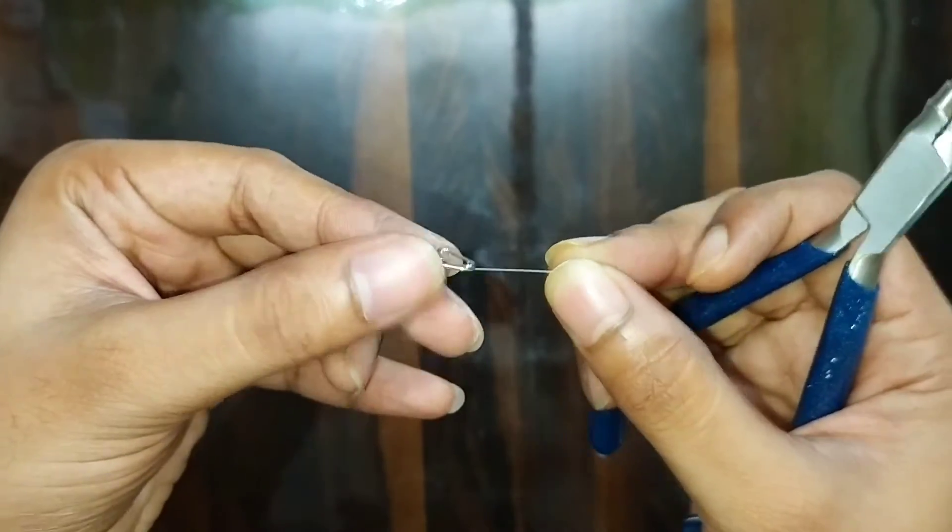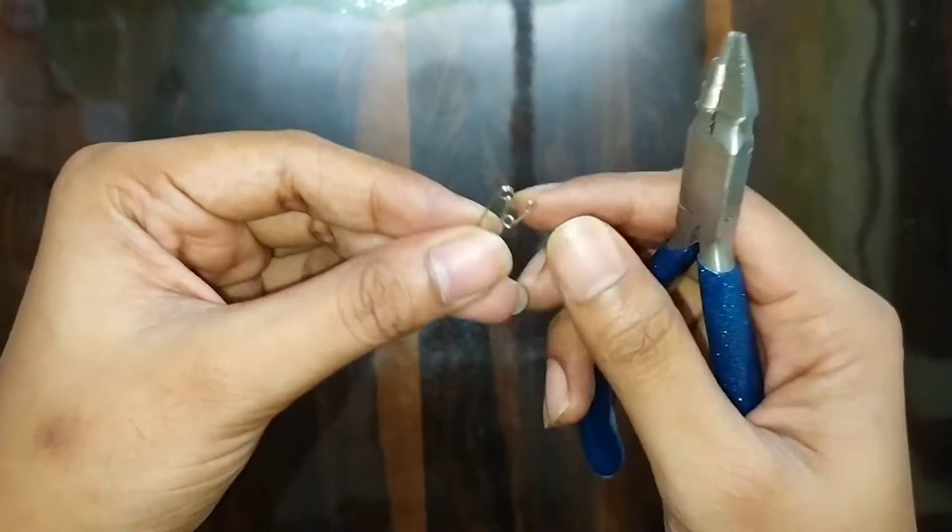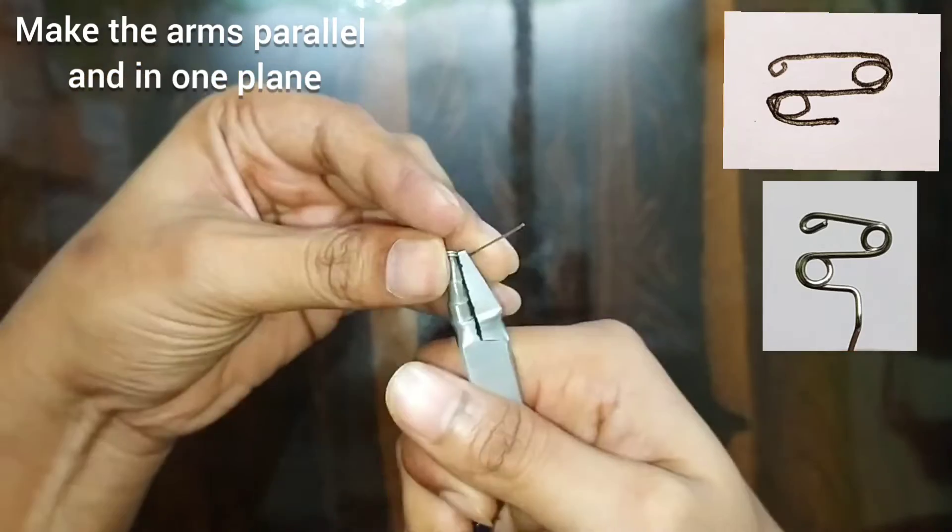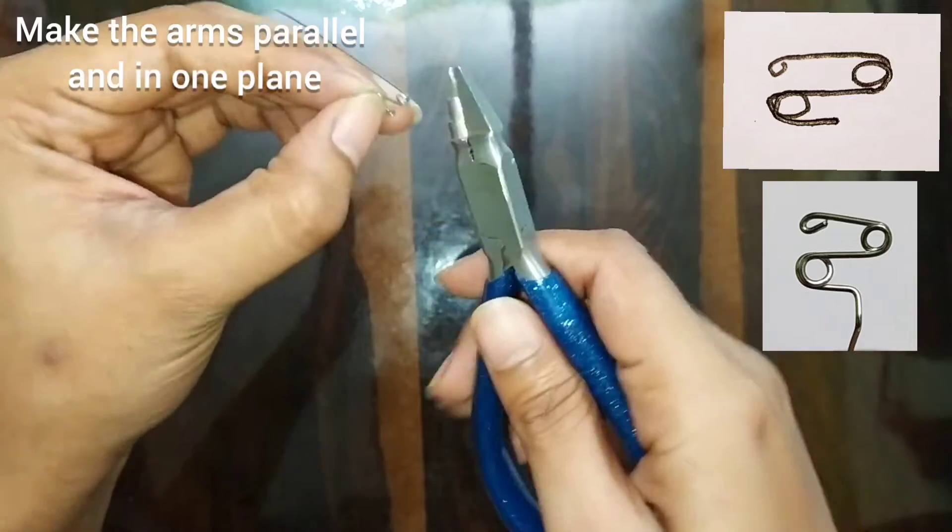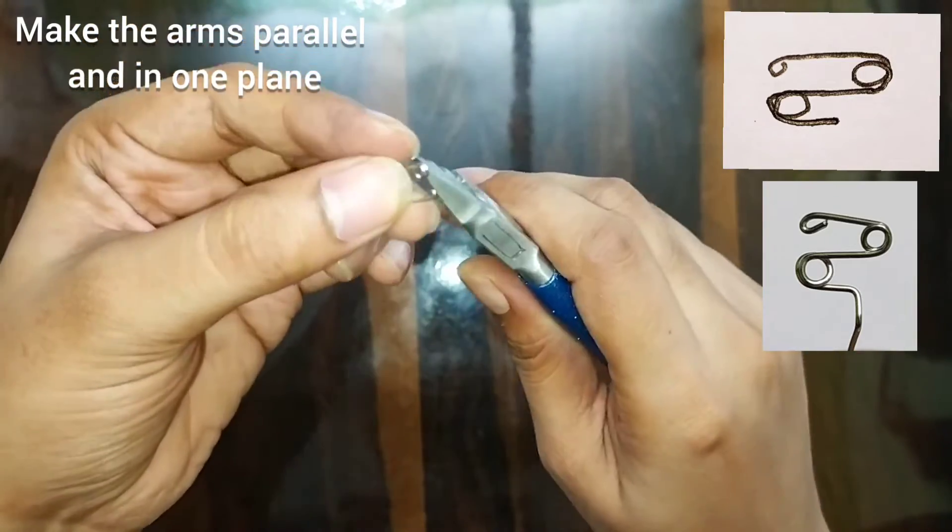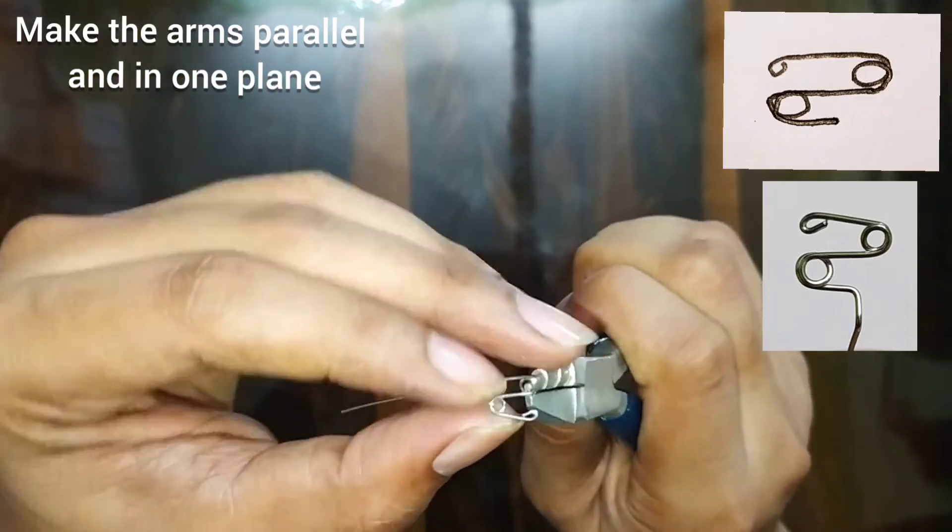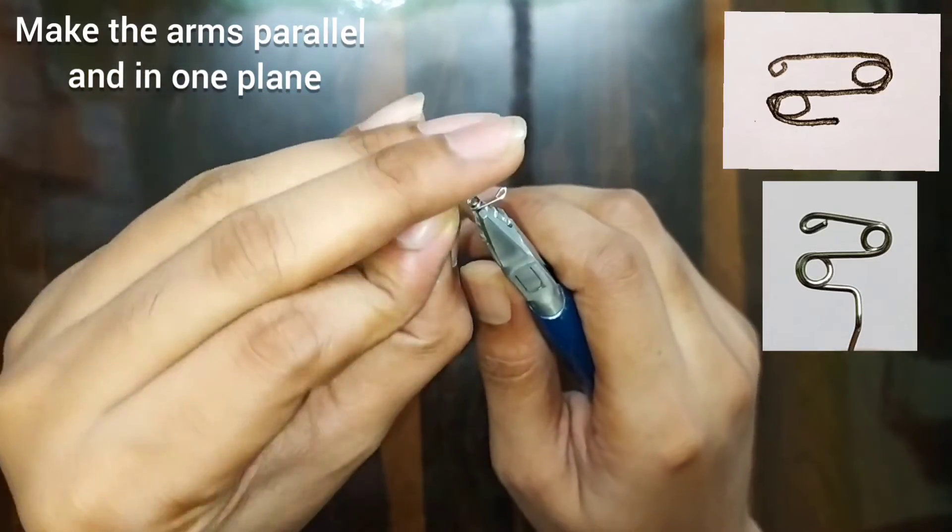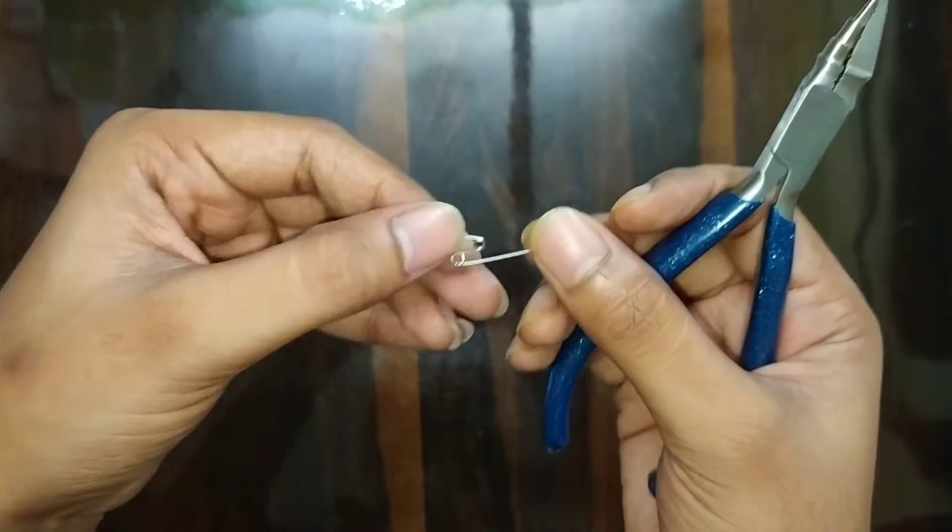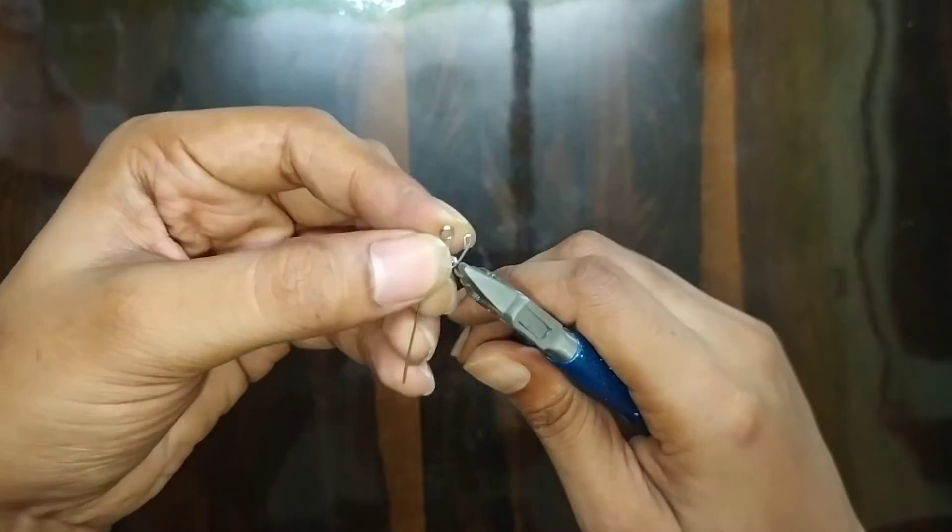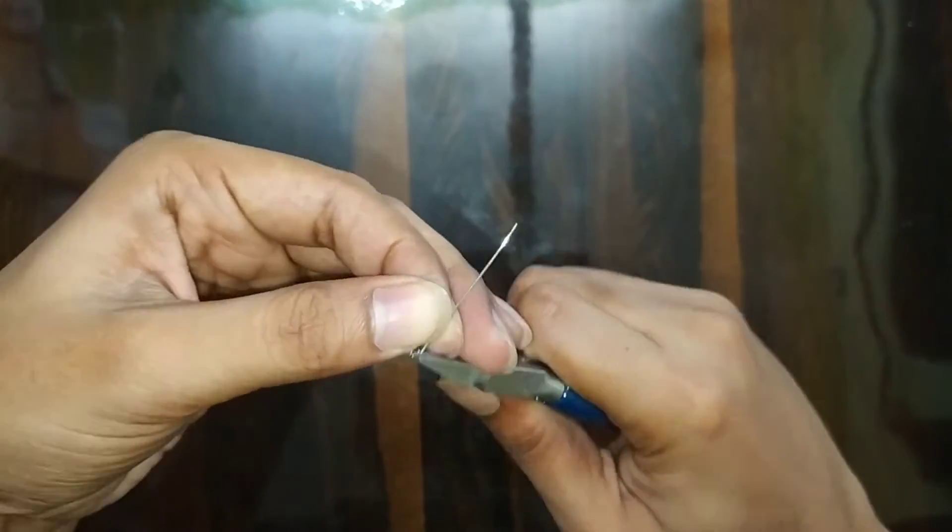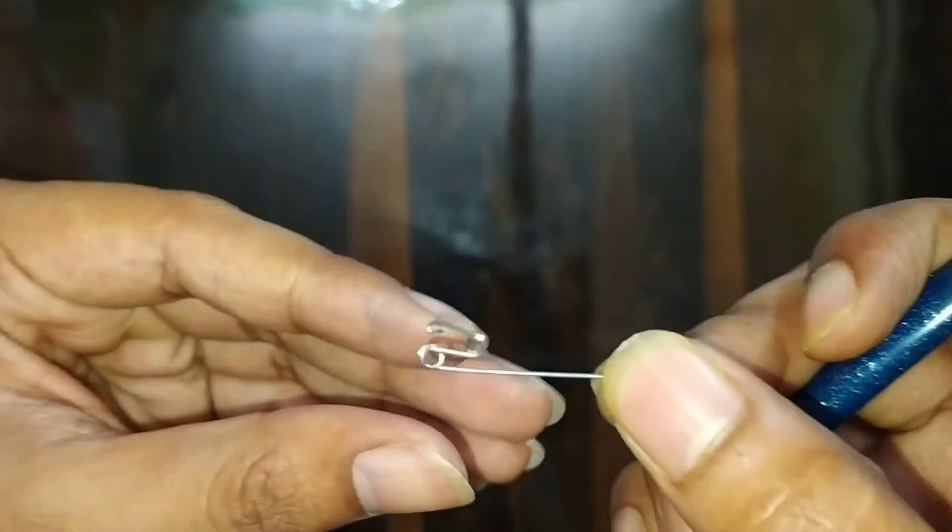Here we will do some minor corrections and try to make it in the plane. Make the arms parallel to each other. You can check here how it is looking.